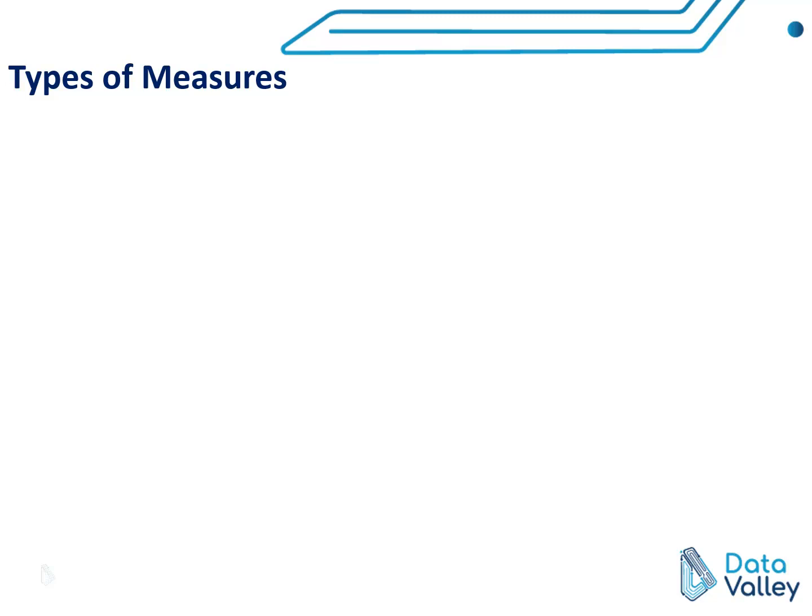As we mentioned before, any business process or event has two sides: we have the measures side and we have event details or business process details, which is the dimension side. In any fact table we have measure columns representing measures — the output or outcome of a business process or event — and some columns representing dimensions.